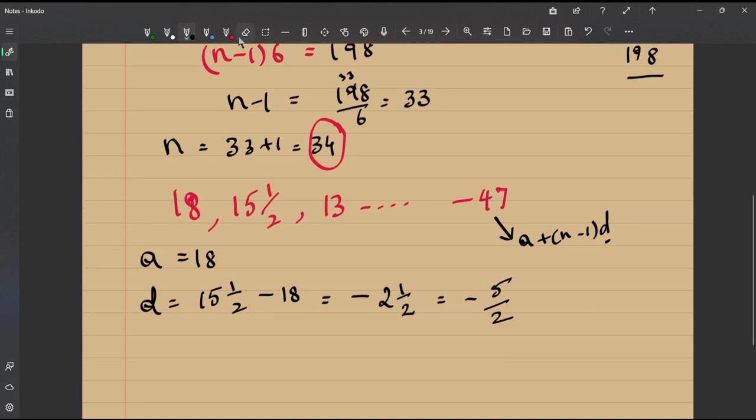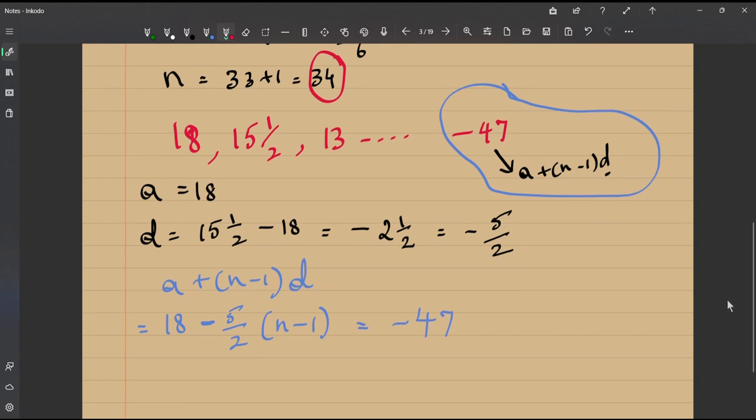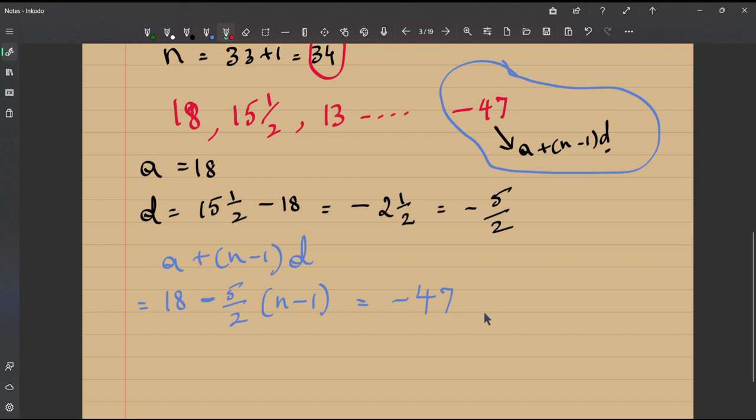So now let us substitute all of what we know in this. a plus n minus 1 d is equal to minus 47. a plus n minus 1 into d which is 18 plus, the plus becomes minus because our d here is negative, minus 5 by 2 into n minus 1 is equal to minus 47. So can we further simplify this? Yes, let us subtract 18 from both sides. You get minus 5 by 2 into n minus 1 is equal to minus 47 minus 18.